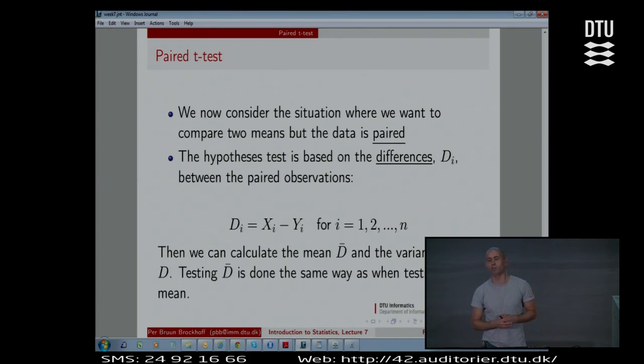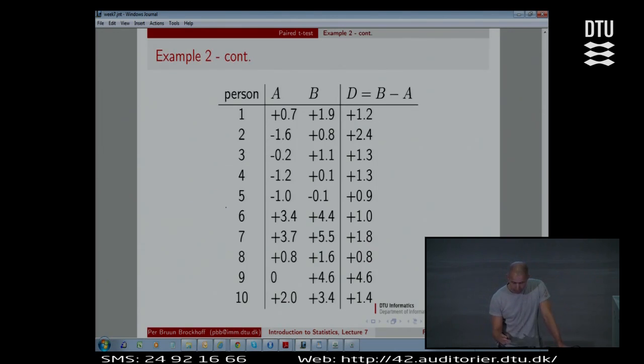It is very easily handled by what we already know, so we can do that very rapidly. What is done in practice when we have paired data is that we simply subtract the two from each other and only look at the difference. We transform these two numbers into one number, expressing that B was 1.2 hours better than A for this person. So we basically transform the two samples into one sample thing and then use what I taught you two weeks ago. Confidence intervals, hypothesis test. That's it, basically.